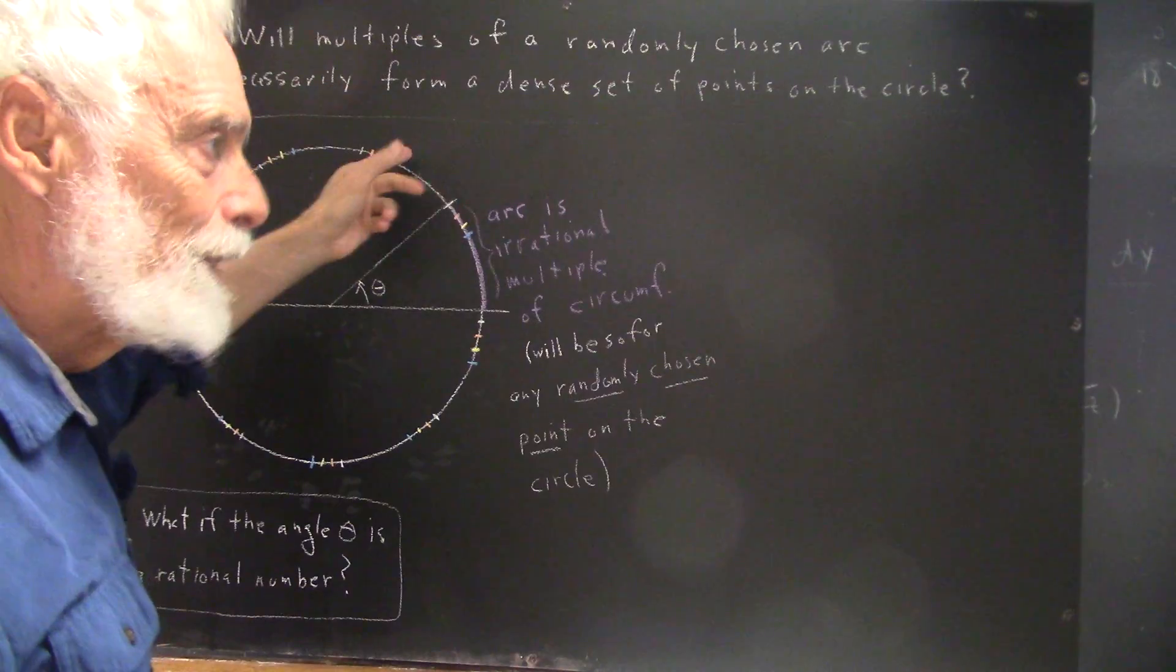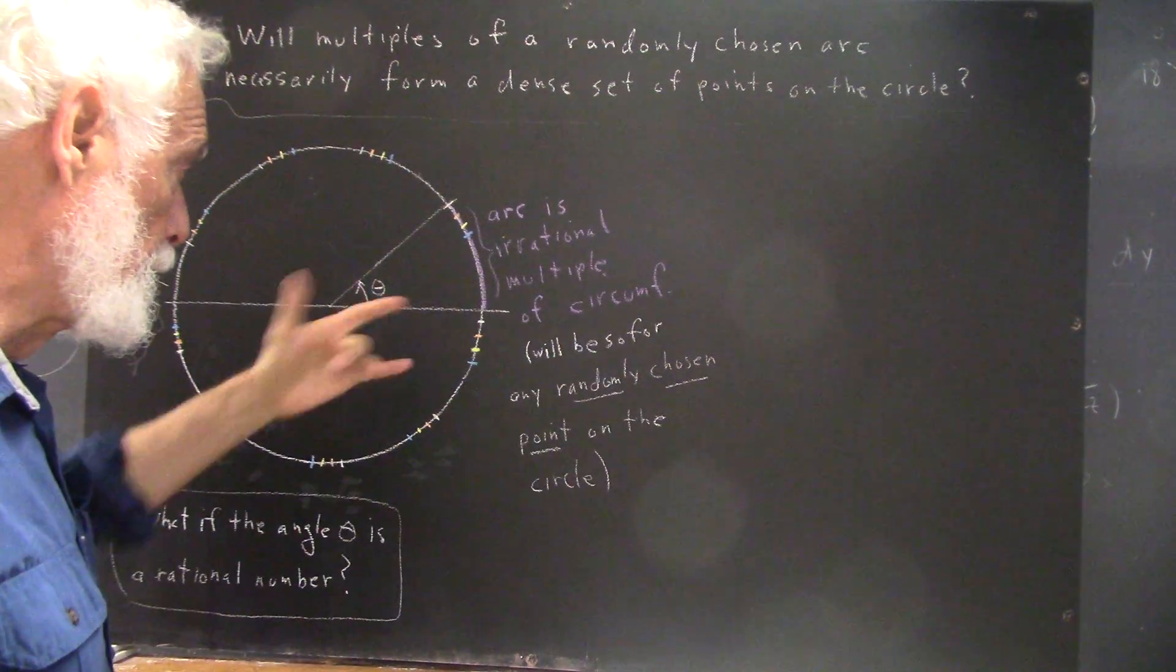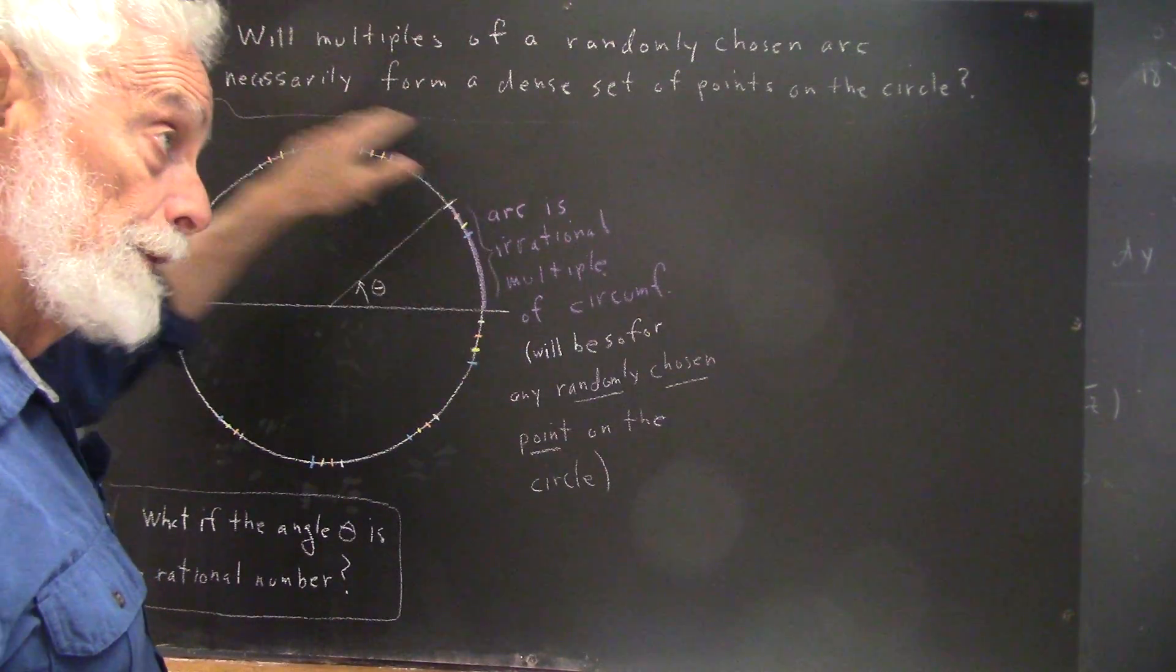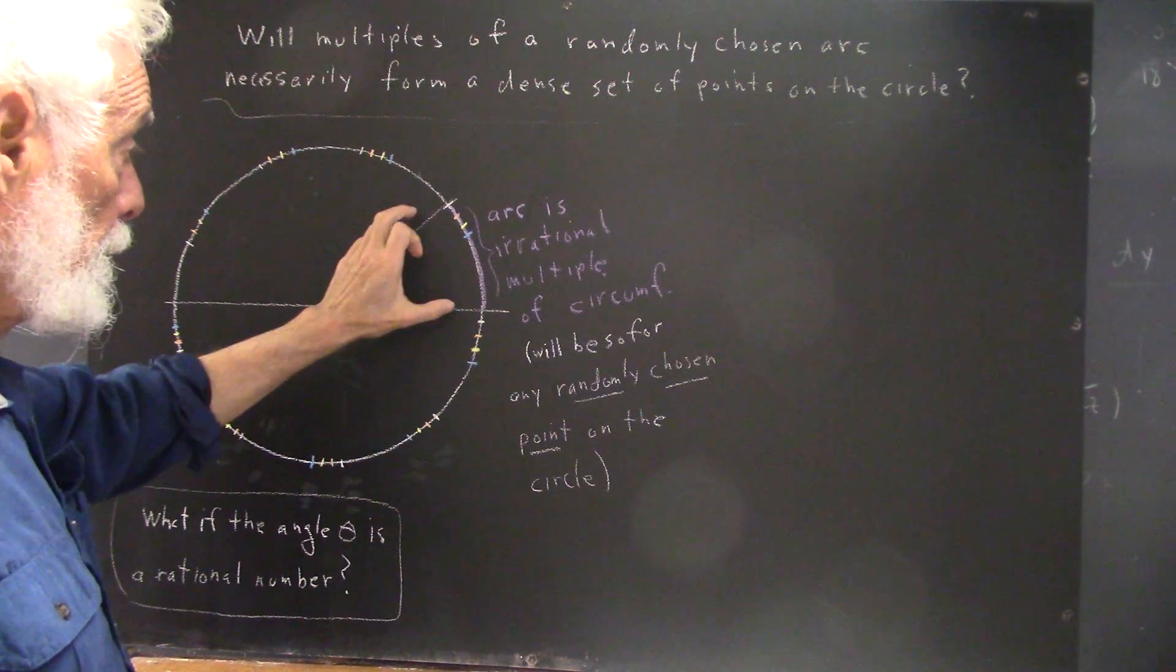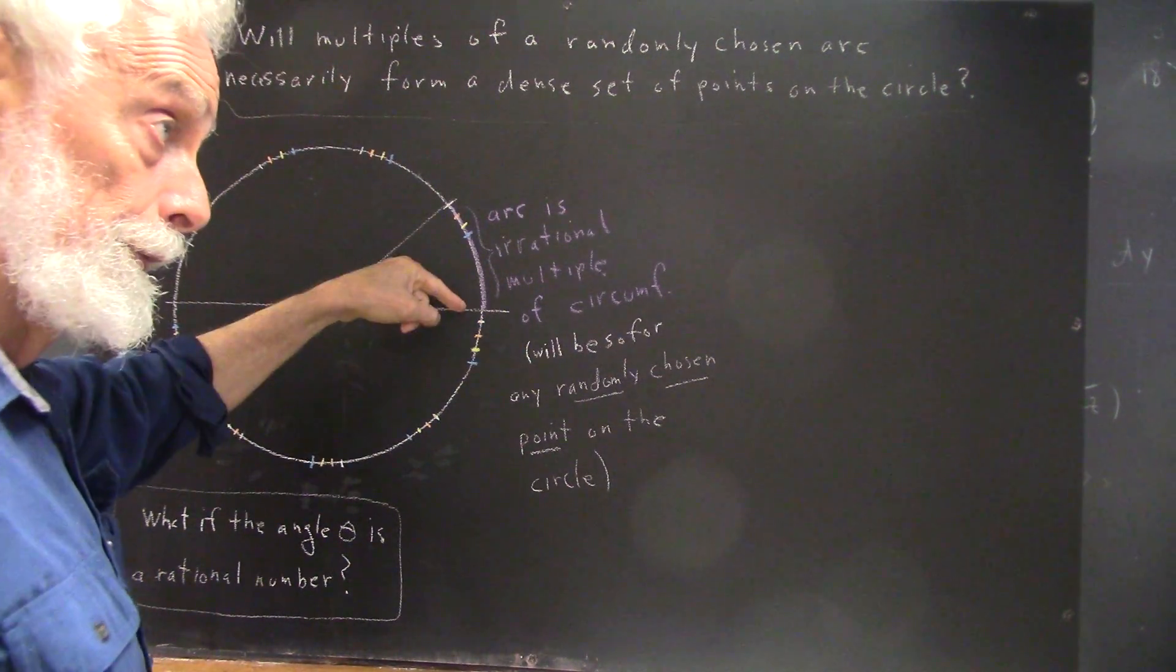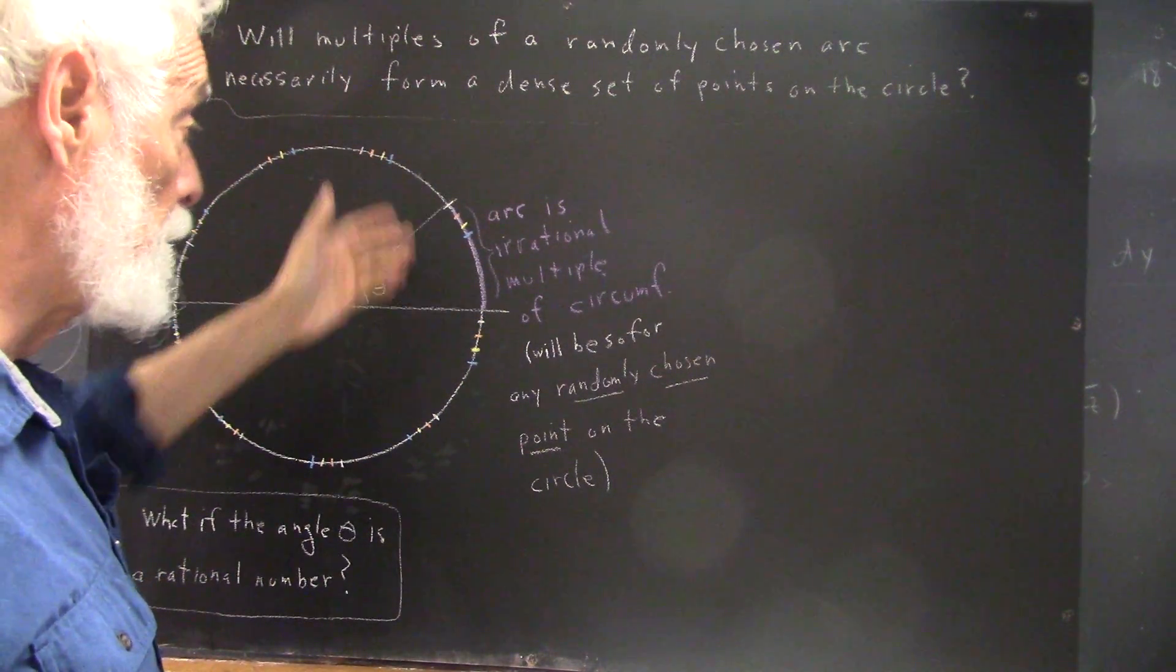Now, there's a number chosen with this arc. The number will be this arc as a multiple of the circumference of the circle. Obviously, this will be a multiple by a number less than one since this arc is less than the circumference of the circle, the length of this arc.